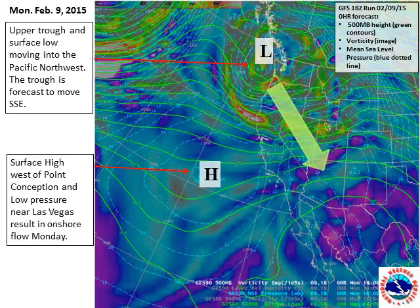This image was taken from the GFS model, valid at 10 a.m. or 18Z on Monday, February 9. The plot shows 500 millibar heights in the green contours, 500 millibar vorticity, and mean sea level pressure as the light blue dotted line. I've also identified surface high and low centers, and the green arrow depicts storm motion. At 10 a.m. on Monday the 9th, an upper trough is moving into the Pacific Northwest with a strong wave — the red colors in the image — moving into northern California. The trough is forecast to shift southeastward across the area. Meanwhile, you can see surface high pressure west of Point Conception with lower pressure near Las Vegas, and the result was onshore flow across the area on Monday.